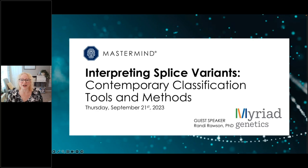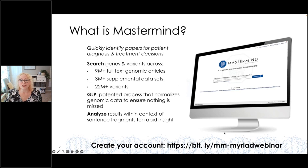Hello everyone and welcome to today's webinar where we'll be discussing contemporary tools and methods for interpreting splice variants in hereditary cancer. My name is Candace Chapman and I'll be your host. Mastermind is the most comprehensive source of genomic evidence and can be used to quickly identify and review papers for patient diagnosis and treatment decisions. Our guest speaker from Myriad Genetics will discuss the multifaceted approach that brings together RNA analysis, functional evidence in the literature, published clinical cases, and other methods to classify splice variants. She will share how to facilitate the clustering of publications for variants that share a common mechanism and how a critical review of all available evidence is crucial for interpreting splice variants.